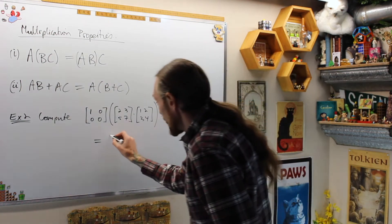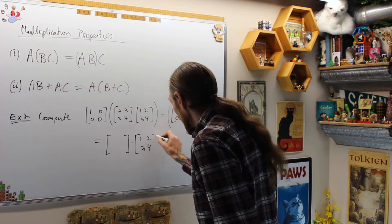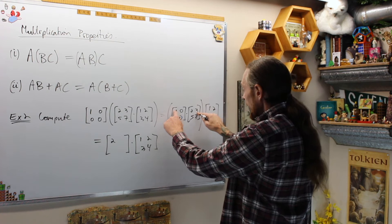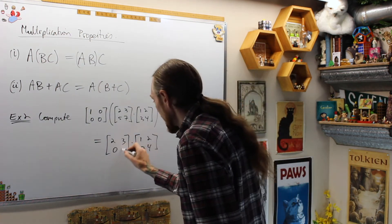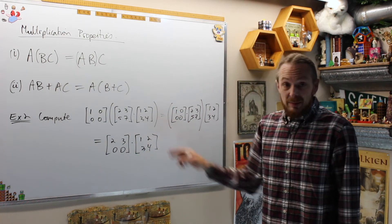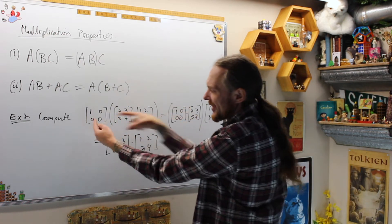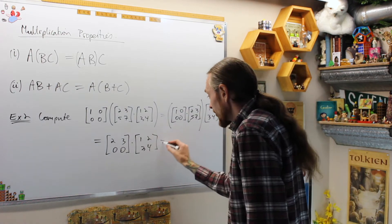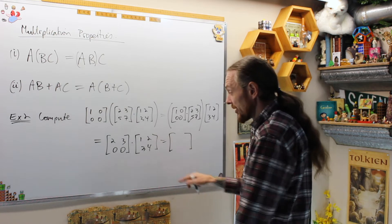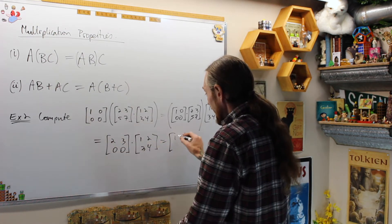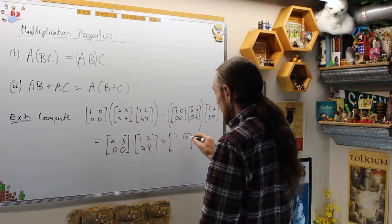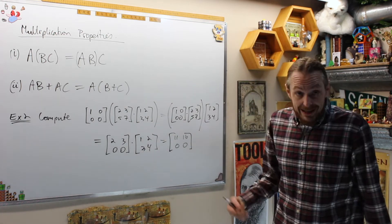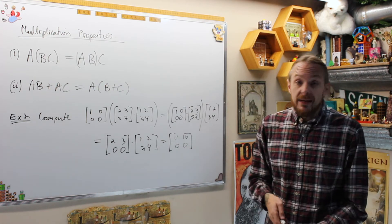That equals a two by two matrix multiplied by [1, 2; 3, 4]. This is how you work fast. Now I multiply: two plus zero is two, three plus zero is three, and then zero, zero, zero, zero. That was much better — I still have two zeros which makes this multiplication easier. Then the final result is: two plus nine is 11, four plus 12 is 16, and then zero, zero, zero, zero. This is the matrix multiplication result. If you compute it the other way you'll get the same thing, but it's more work, so work smart and associate things.